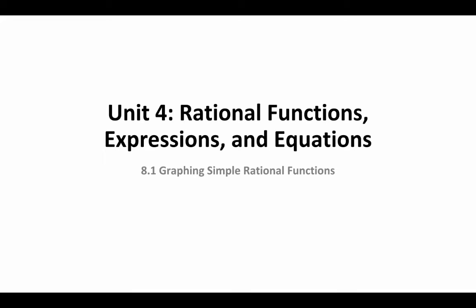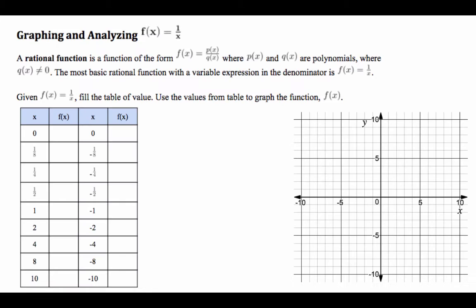Welcome to a lesson on 8.1, graphing simple rational functions. We'll be learning to graph and analyze f(x) = 1/x. That's a type of rational function, defined as a function in the form f(x) = p(x)/q(x), where p(x) is the numerator and q(x) is the denominator, and they're both polynomials. The denominator q(x) cannot equal zero.